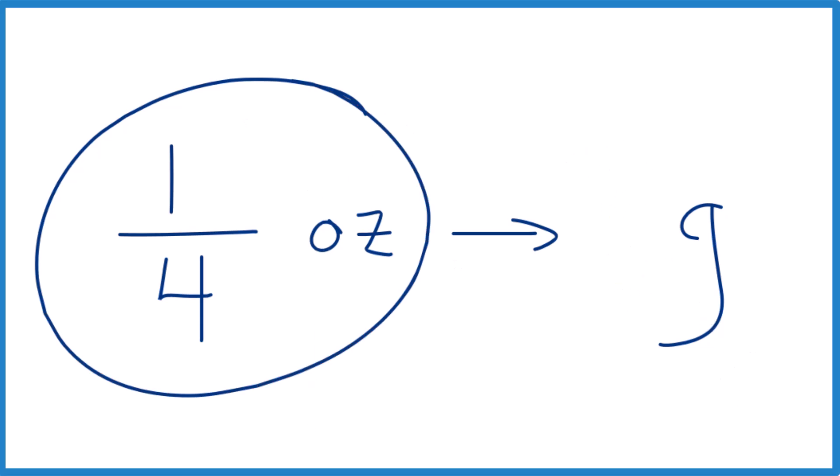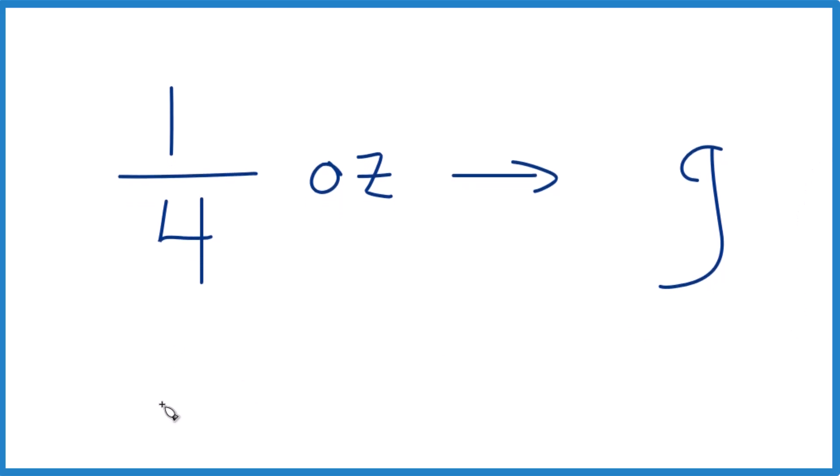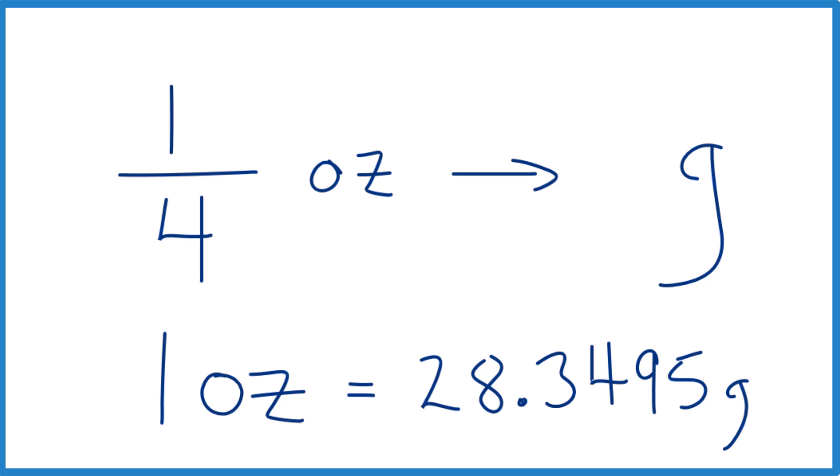The easiest way to do this is to know that one ounce equals 28.3495 grams. And let's round that to 28.35.